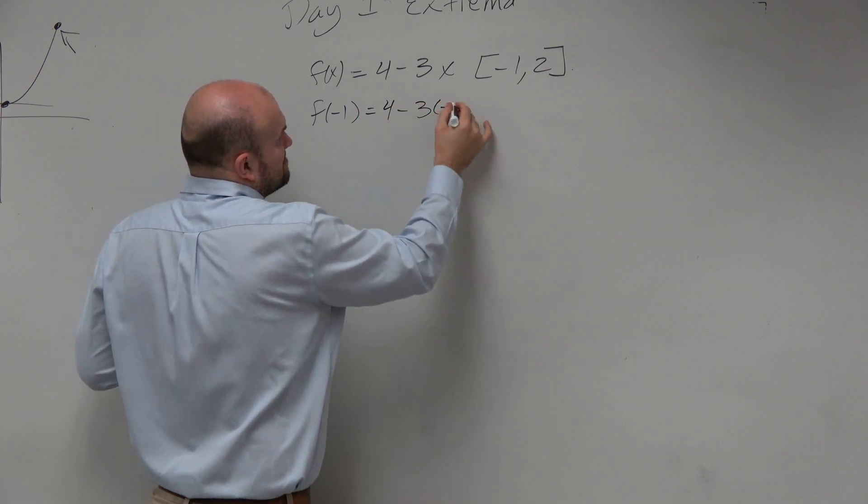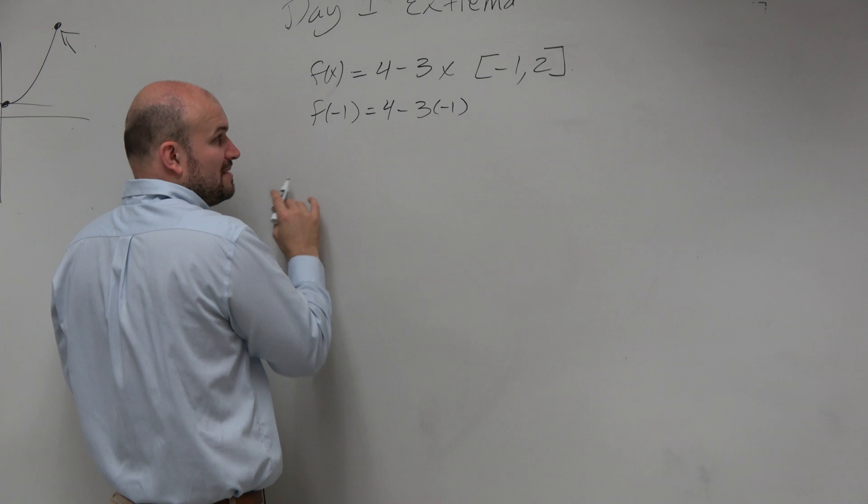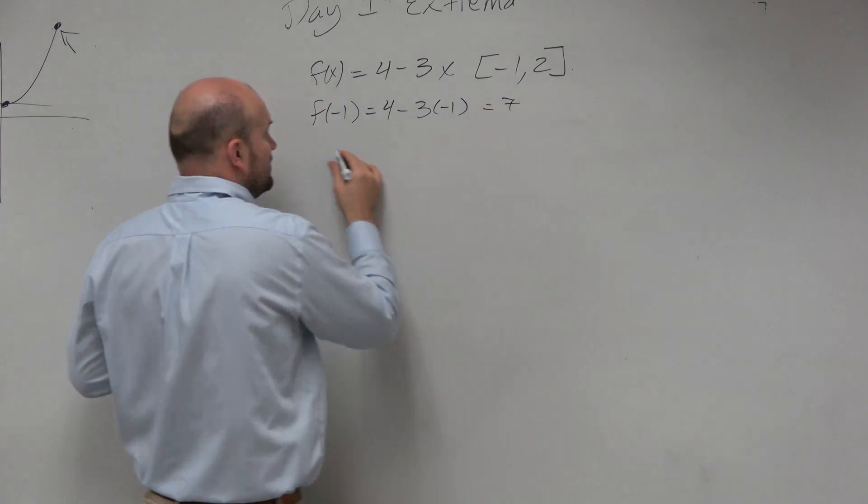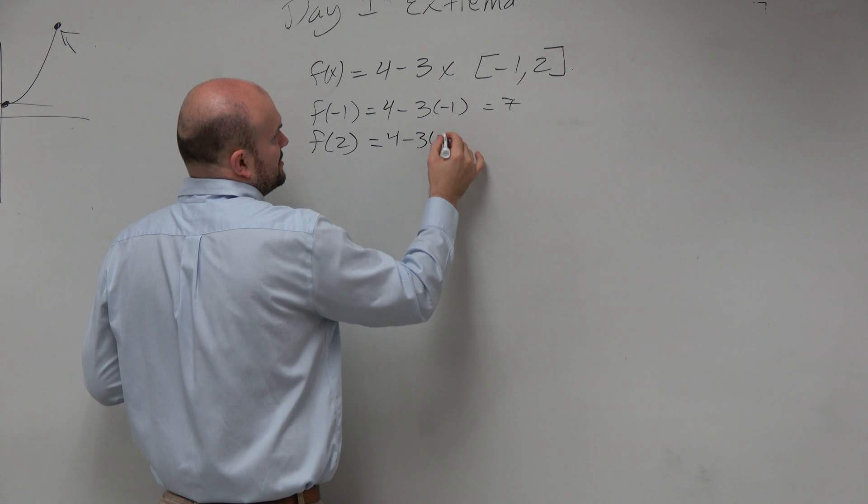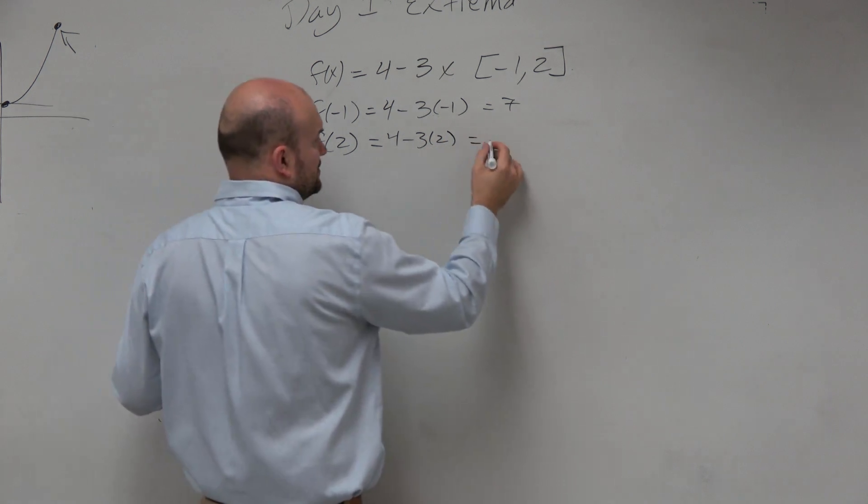4 minus 3 times negative 1. That becomes a positive. That's positive 3. That equals 7. And f of 2 is 4 minus 3 times 2. That becomes 6, which is equal to negative 2.